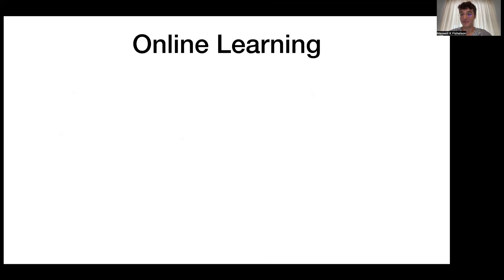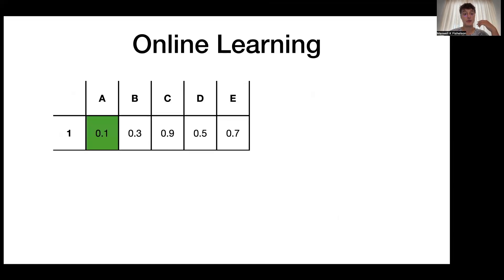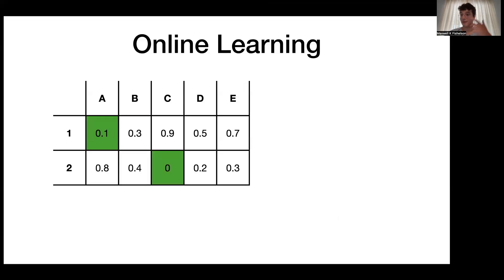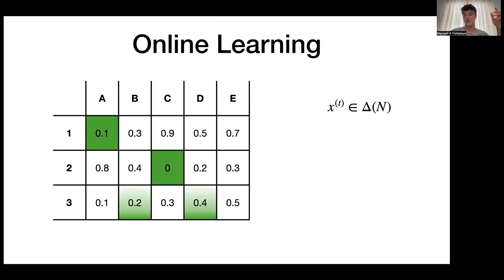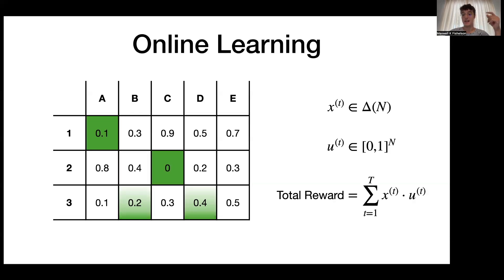Let's start with the basics of online learning. In this setting, we have some set of actions and we repeatedly choose one. At every time step we make a selection and receive some reward, as well as observing all the rewards for the other actions. Our goal is to adapt over time and make good decisions based on the history of rewards. Also allowed is selecting a distribution over actions, in which case our reward is the expected reward. Formally, every round we select an action from a distribution, receive an adversarially chosen reward vector, and over T rounds incur total reward equal to the sum of dot products.